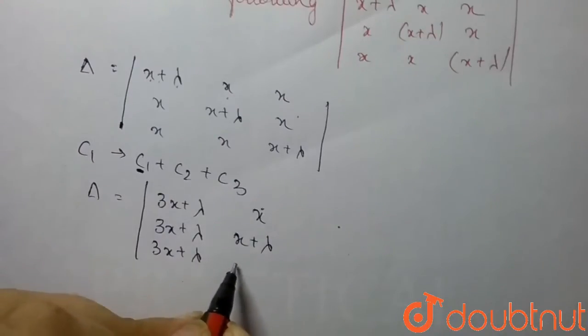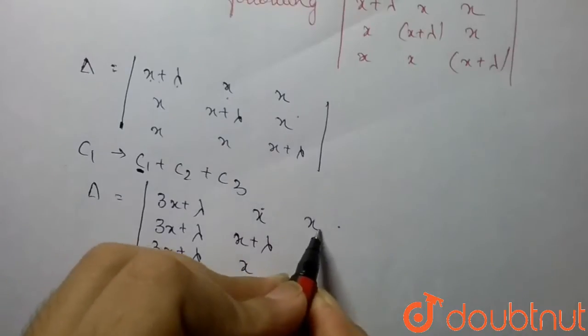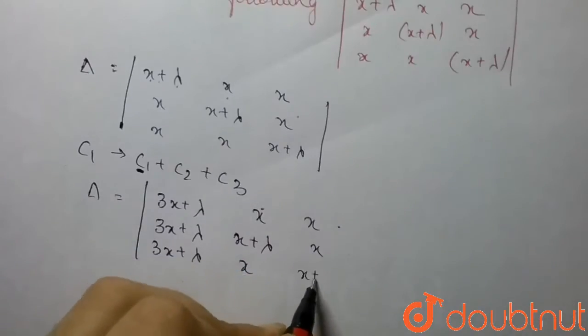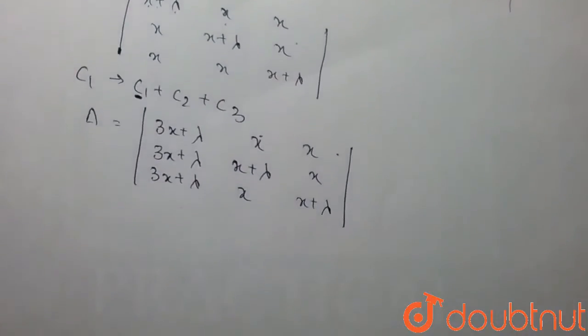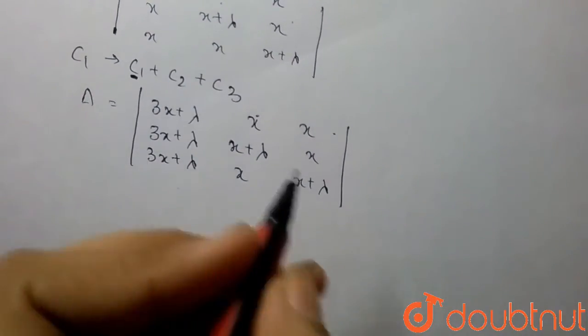We can rewrite this, or we can take the common factor 3x+λ from the first column.